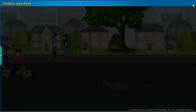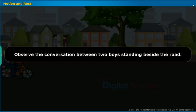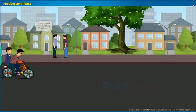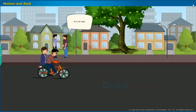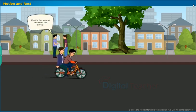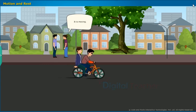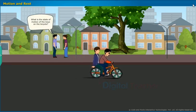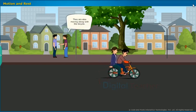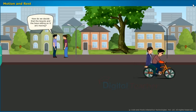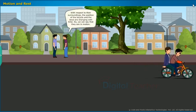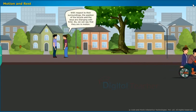To understand the idea of motion and rest, take up the following activity. Observe the conversation between two boys standing beside the road. Hey, I got a small doubt. What is the state of motion of the tree? It is at rest. What is the state of motion of the bicycle? It is moving. What is the state of motion of the boys on the bicycle? They are also moving along with the bicycle. How do we decide that the bicycle and the boys sitting on it are moving? With respect to their surroundings, the position of the bicycle and the boys are changing with time. So, we can say that they are in motion.